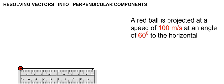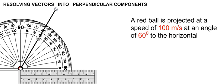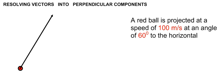The direction the velocity vector acts, which is 60 degrees above the horizontal, can be shown. We have now represented the velocity vector of 100 meters per second acting at an angle of 60 degrees above the horizontal as a vector diagram.